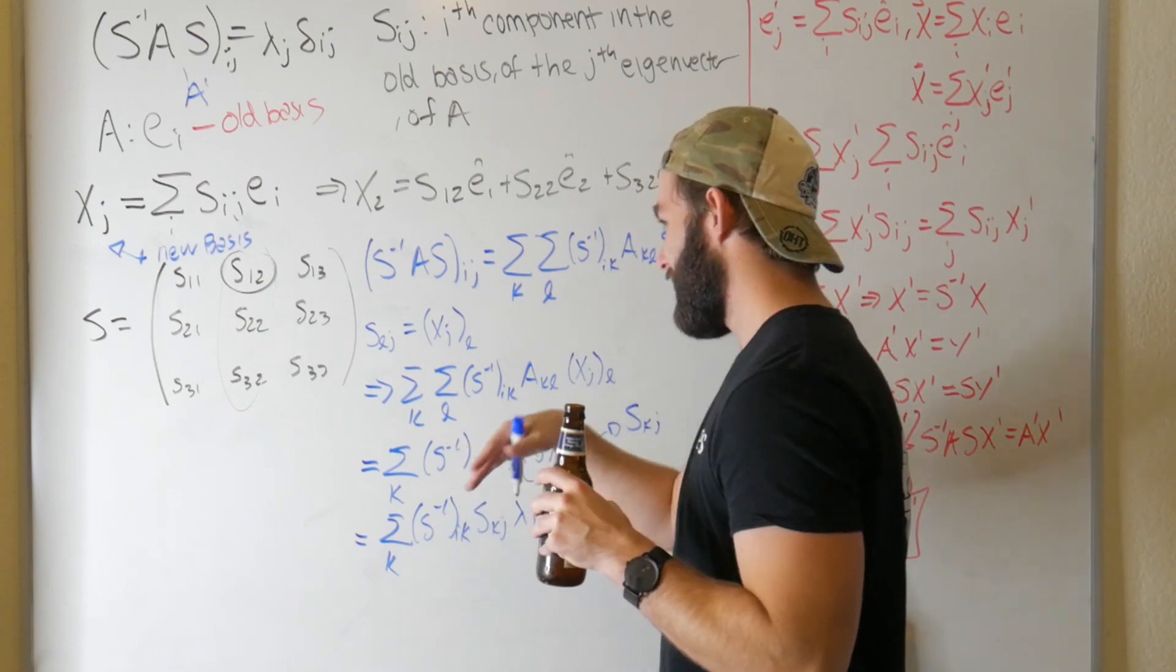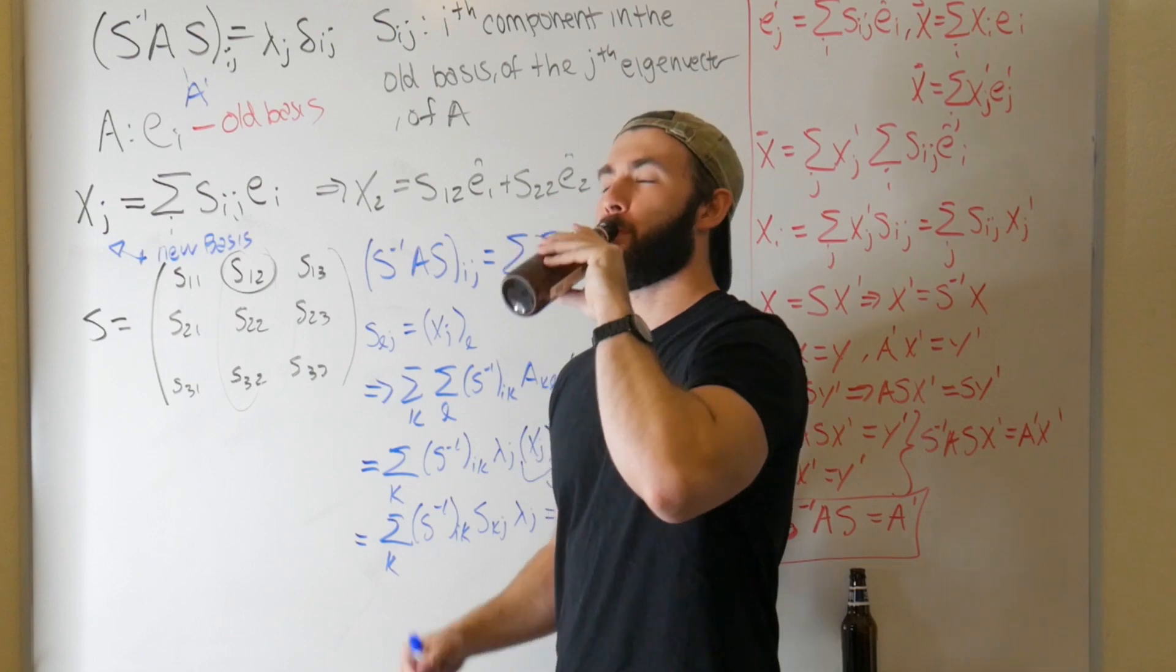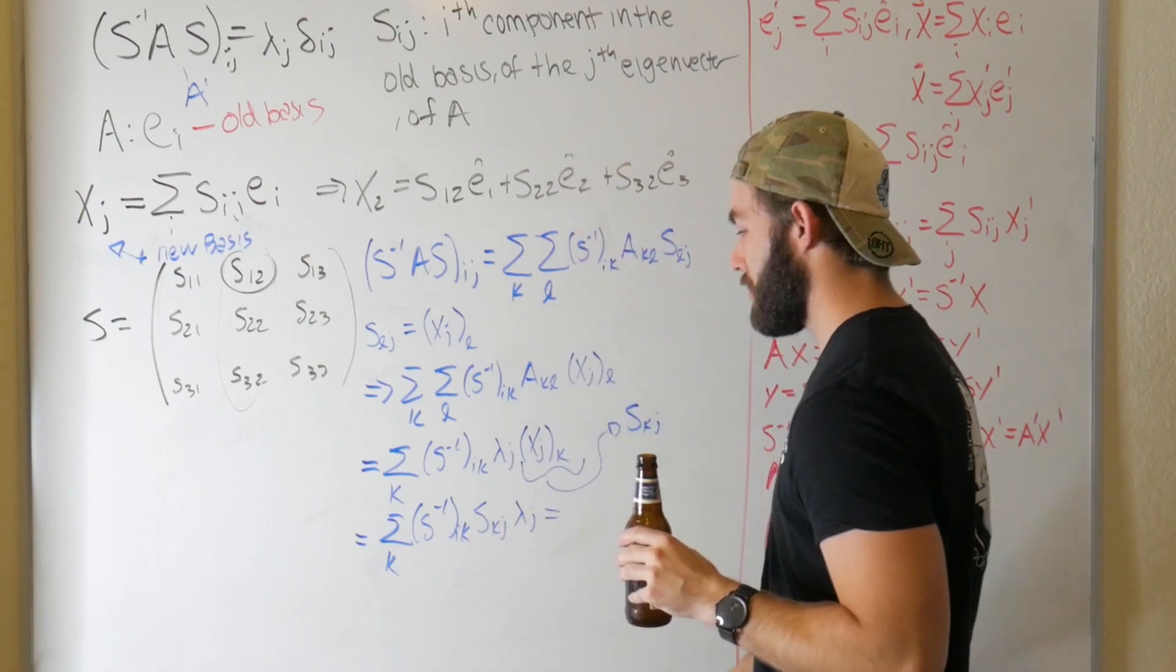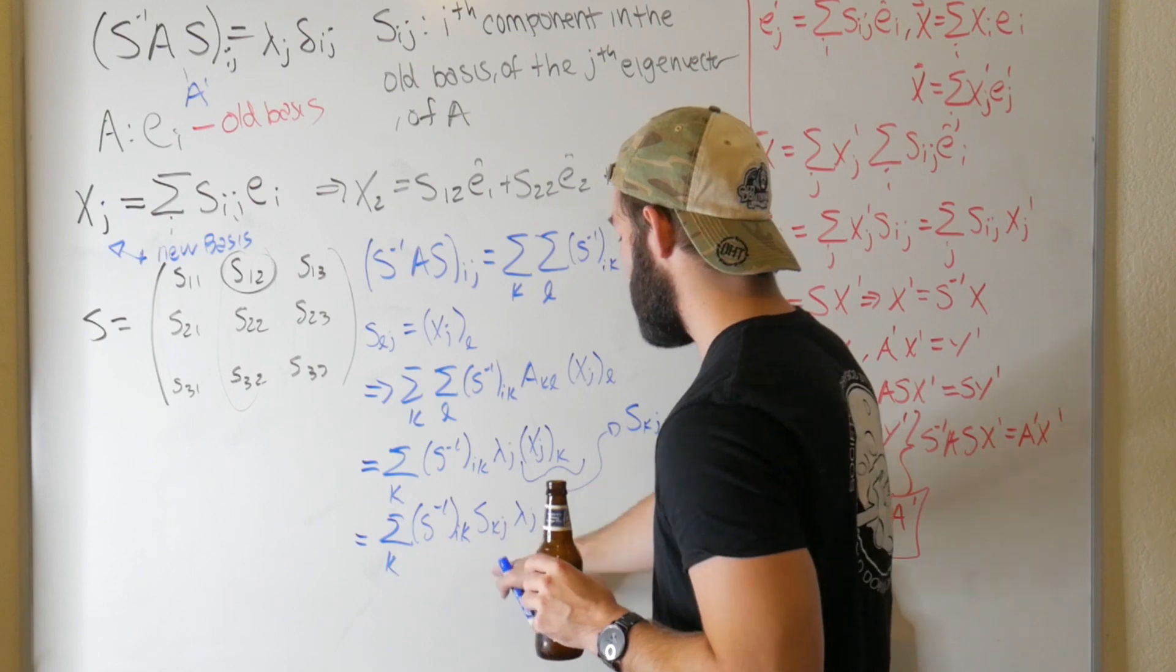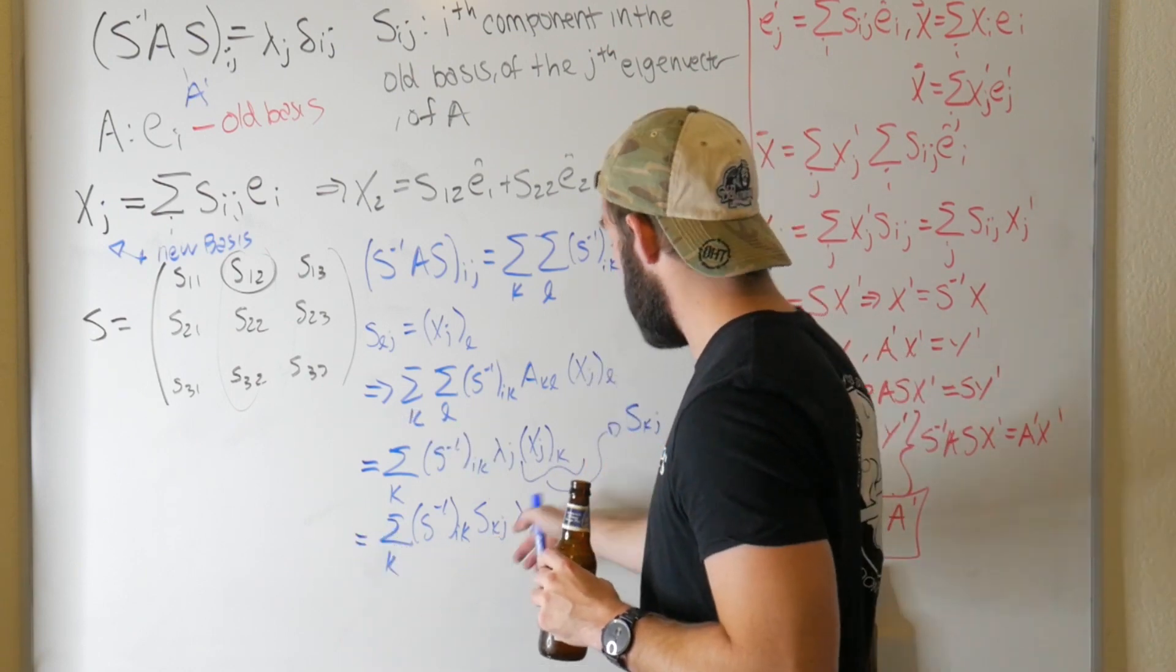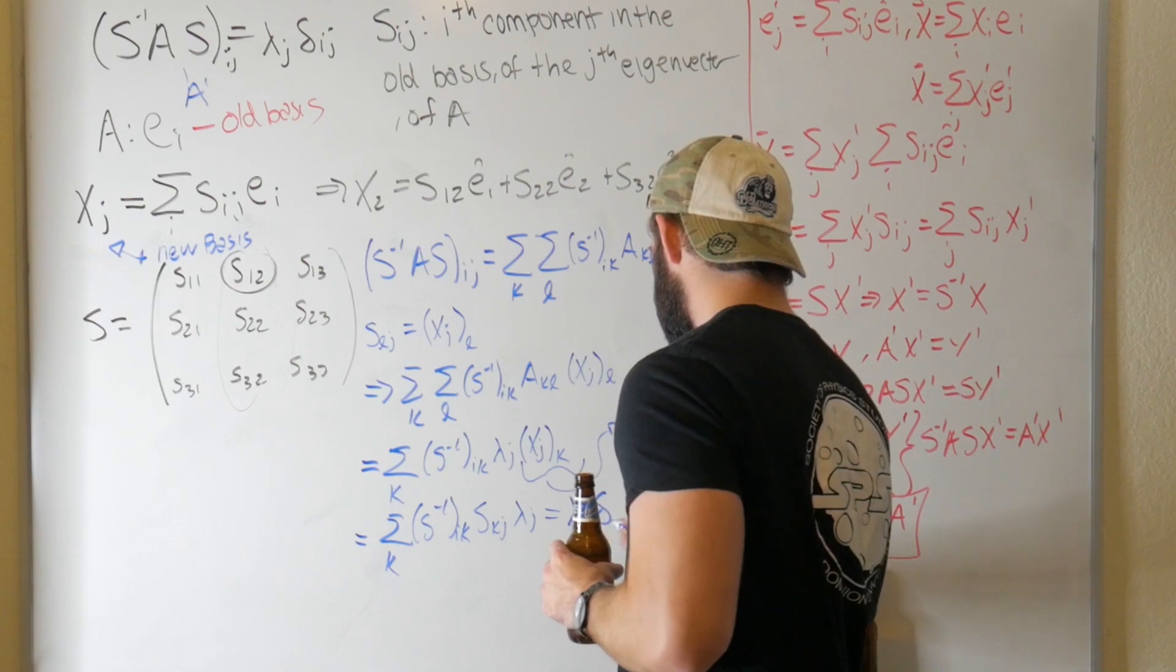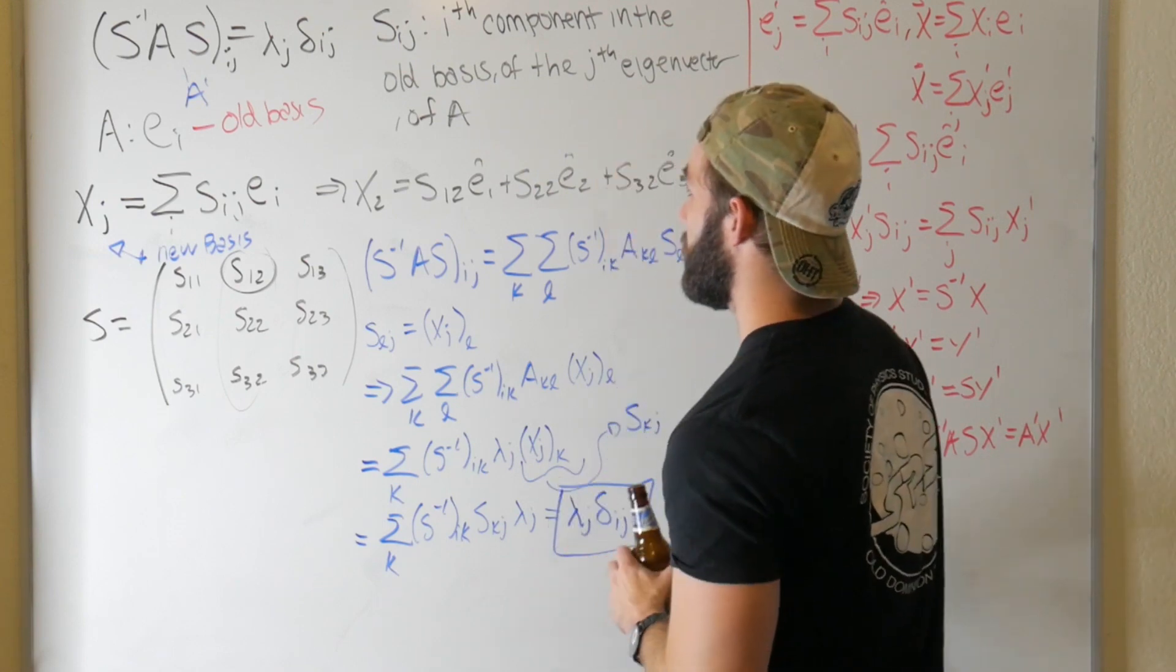So what do we know? So we know multiplying these components together is either going to give us a 1 or a 0, since these are inverses of each other. So in other words, if I is not equal to J, it's going to give us a 0, and it's going to give us a 1 if I equals J. So in other words, again, this is equal to lambda J delta IJ. There we have it, ladies and gentlemen.